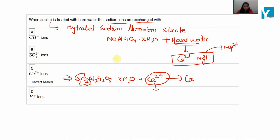But here in our options, we have given only Ca2 positive ions, so I have considered that example. So now Ca2 positive ions will be exchanged with sodium and our product will be like this.